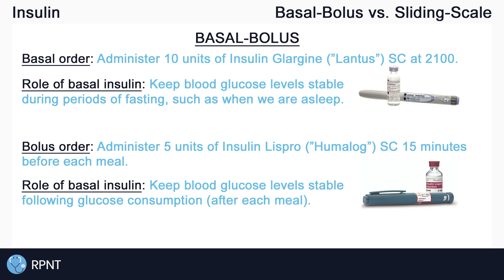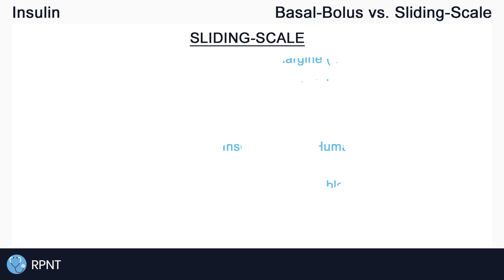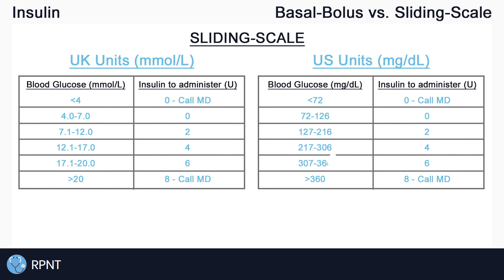All in all, basal bolus orders are not too dependent on the client's blood glucose levels as long as the levels are not outside of the client's baseline. The second order type that we have are known as sliding scale insulin orders. Sliding scale insulin orders look something like one of these — again, depending on where you live, the units will be different.